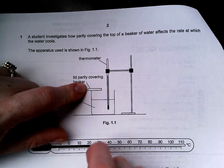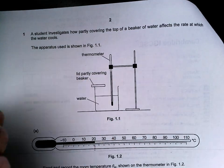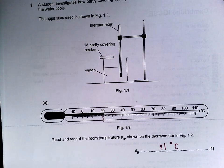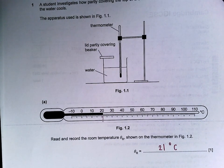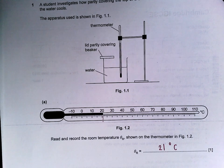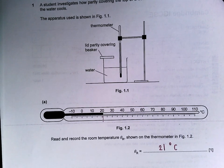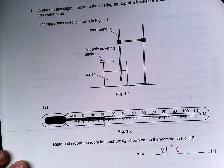The apparatus used is shown in Figure 1.1, so you can see that you've got a beaker of water, the lid partially covers the top of the beaker and then there's a thermometer placed into the water. Part 1 asks you to read and record the room temperature just by reading this thermometer. You should have got 21 degrees Celsius there.